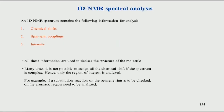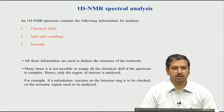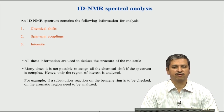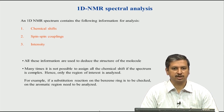Let us start from 1D proton NMR. As we see here in a typical 1D spectrum, there are three parameters you will mainly see. One is called the chemical shift — that is the peak positions. You will also see what is called spin-spin couplings, also known as J coupling, which causes splitting of the peak into small multiplets. This has a lot of information about the structure of the molecule. The next important parameter for analysis is intensity, which is basically the area under the peak.